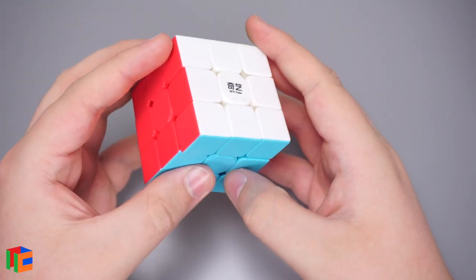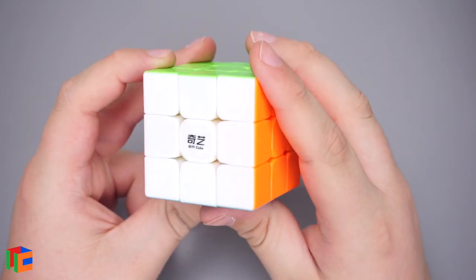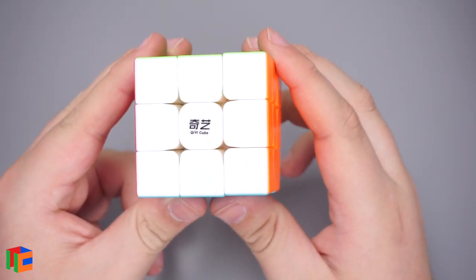But, I definitely wouldn't mind having a stickered version of this puzzle. Anyway, that is the Warrior W 3x3, which I guess is from Qiyi. I haven't seen this logo before.